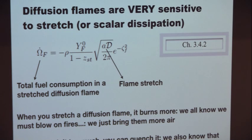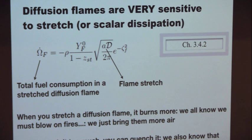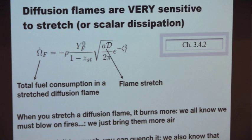You can derive the total reaction rate for a diffusion flame. With infinitely fast chemistry, it doesn't mean you burn the whole universe — it means you burn locally like a delta function, but the integral still has a finite value. The integral gives the total fuel burned in a stretched diffusion flame as a function of stretch, and it goes like the square root of stretch. So when you stretch a diffusion flame, it burns much more. Remember that premixed flames were almost insensitive to stretch — that is not the case for diffusion flames.